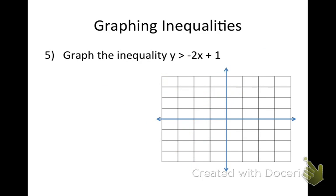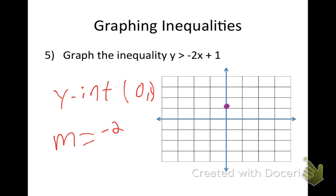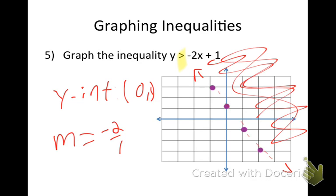Next one — try number 5 on your own. The y-intercept we found was (0, 1). My slope was negative 2, written as negative 2 over 1, so I go down 2 over 1. Looking at the inequality — greater than indicates a dashed line, and greater than means I'm shading above it.